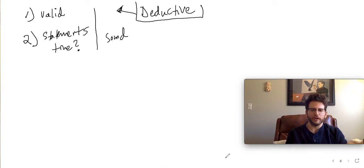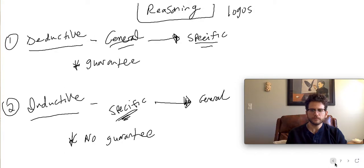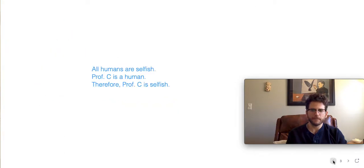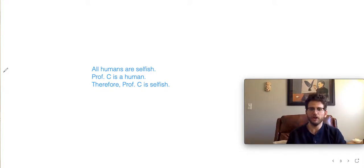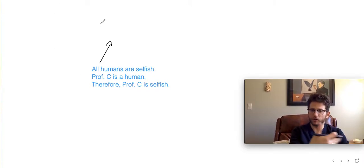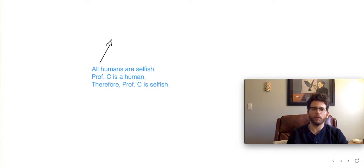Let's look at actual examples. With this first deductive argument, notice that it is deductive — that first statement, 'All humans are selfish,' is a general statement about all humans. From that we're going to try to learn something specific. We're starting with the general and hoping to conclude with the specific. We ask: are the statements arranged in the right way — are they valid? And are they actually true?